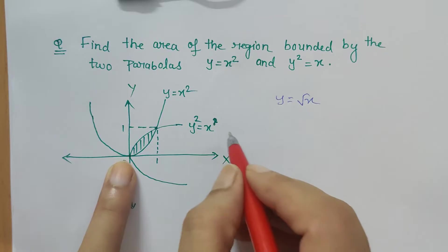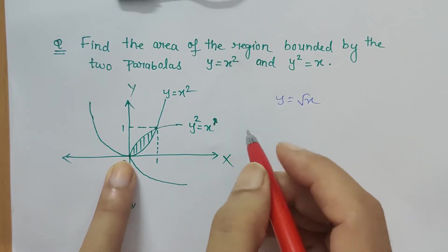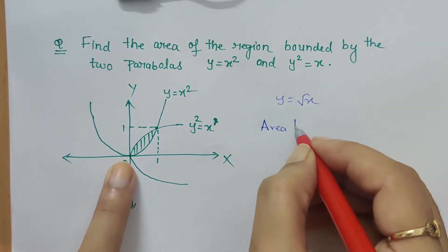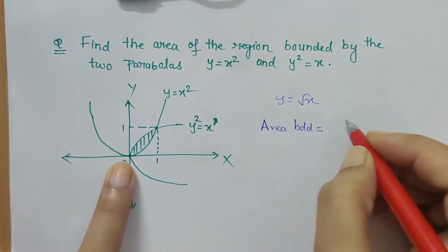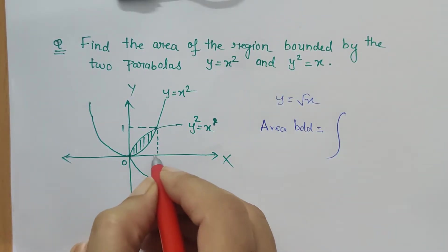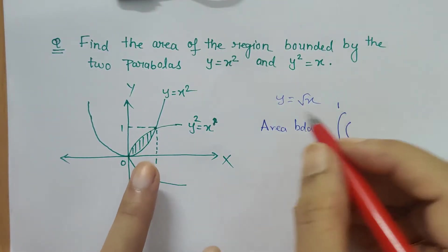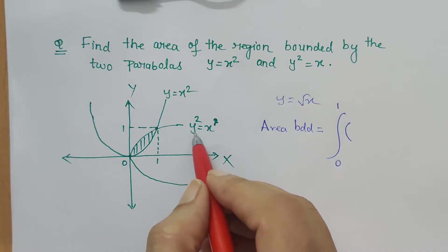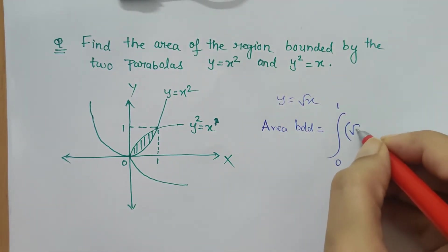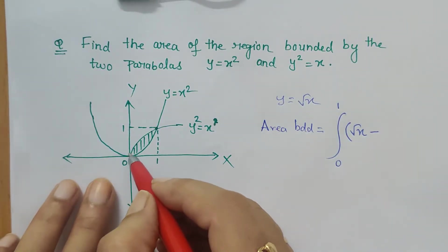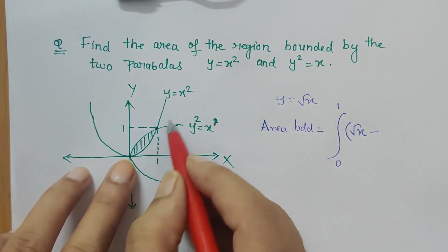Area bounded is from 0 to 1, so the integral is from 0 to 1. I will be using y = √x, so √x dx minus the equation of this curve which is x², so x² dx.